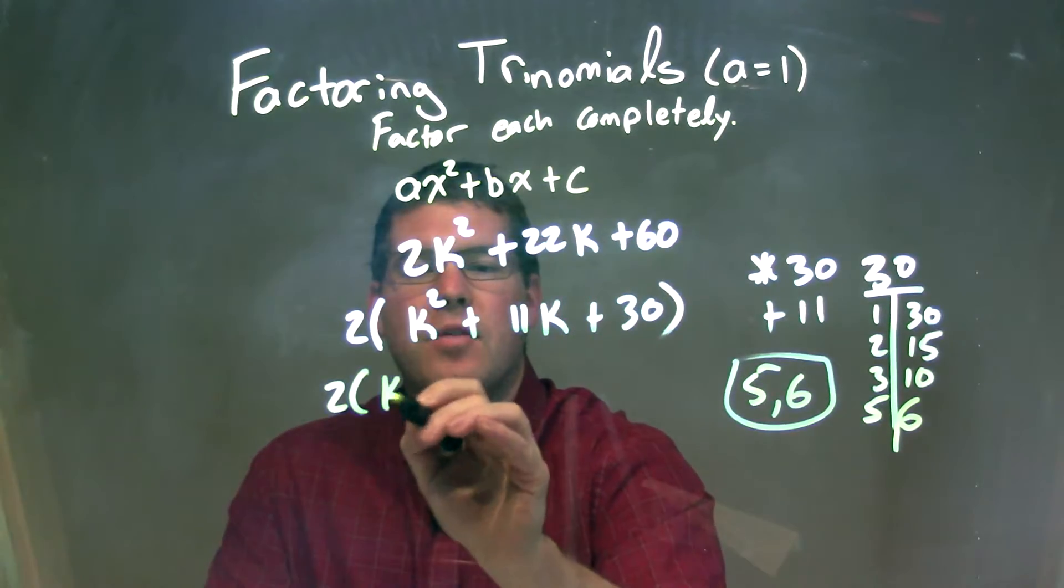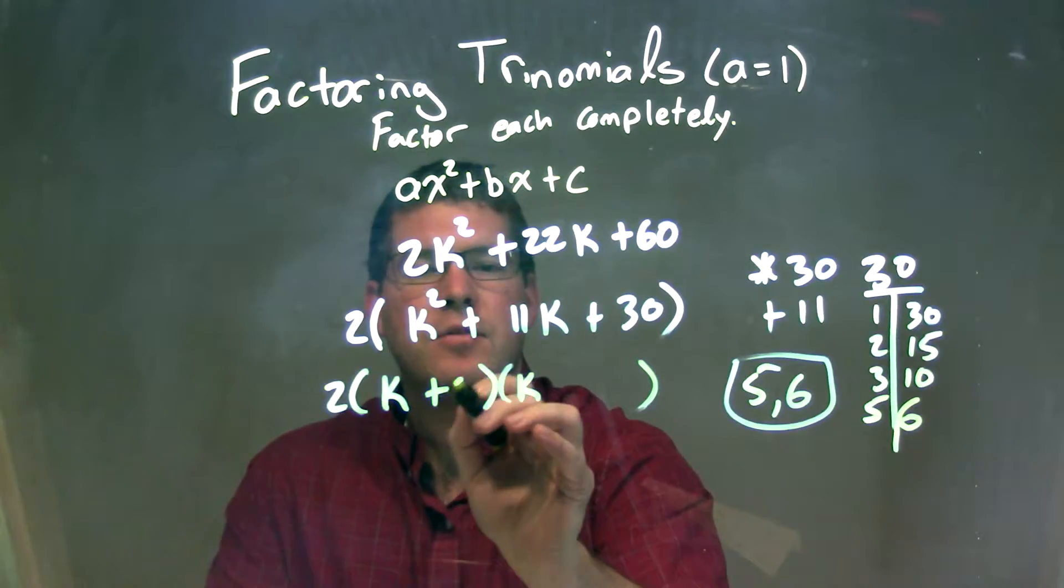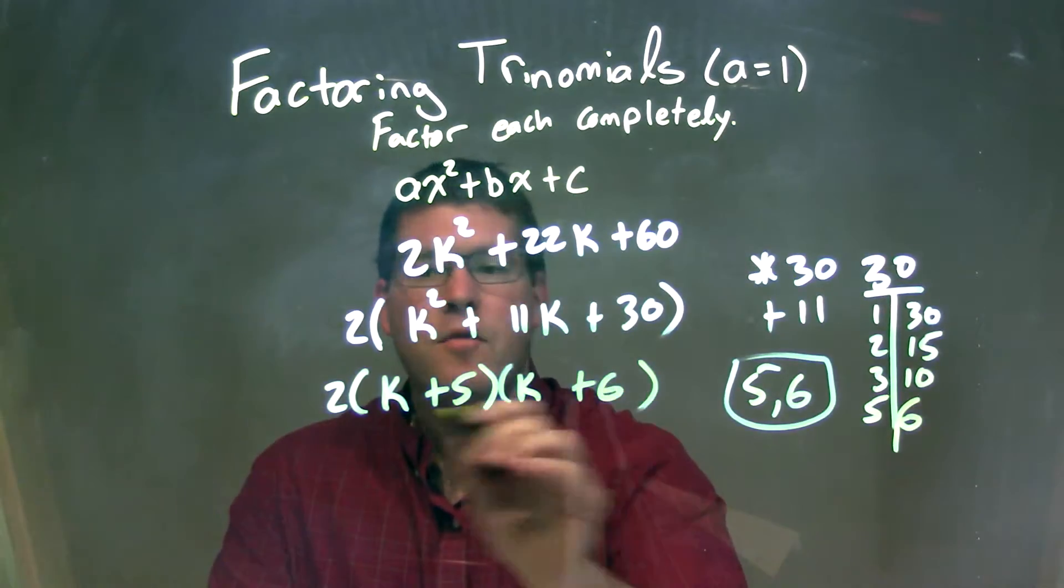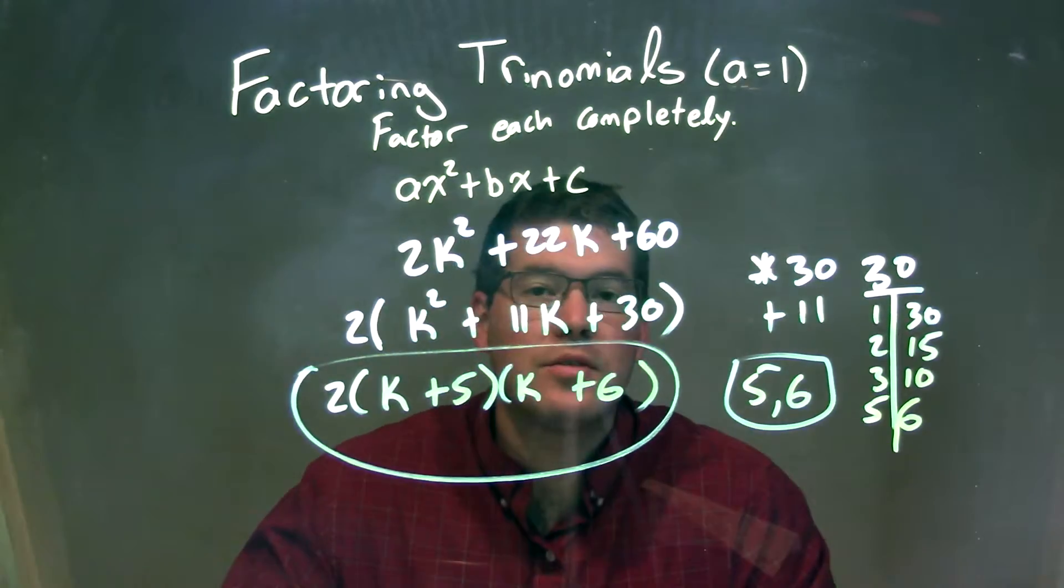So when we factor this out, we get our k into two parentheses. We have a positive 5 and a positive 6. And our final answer is 2 times k plus 5 times k plus 6.